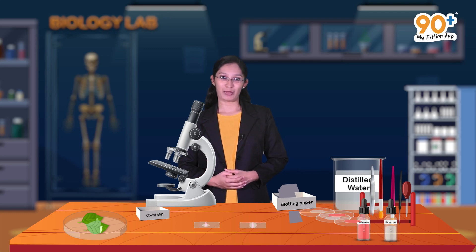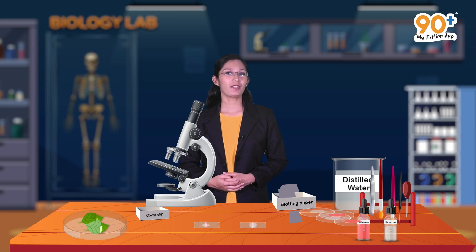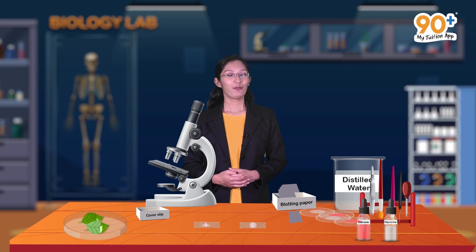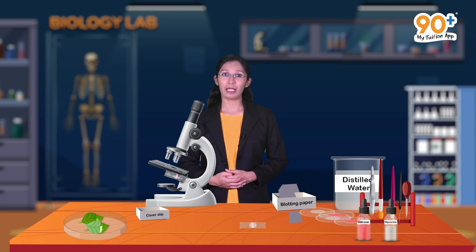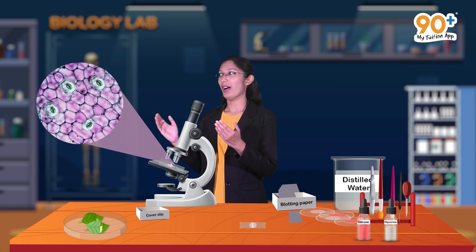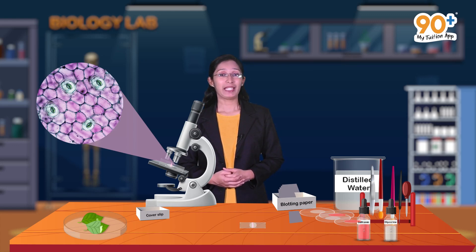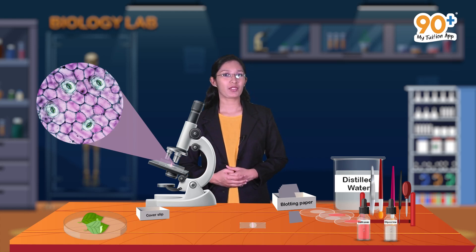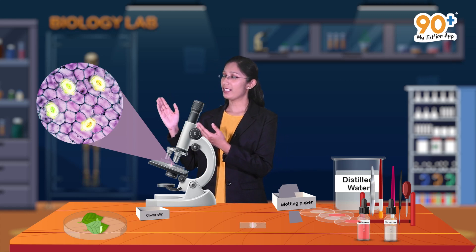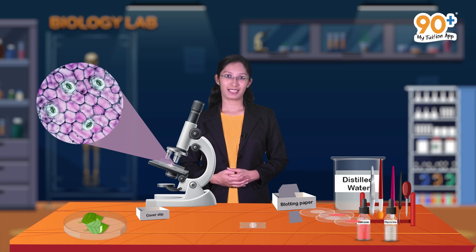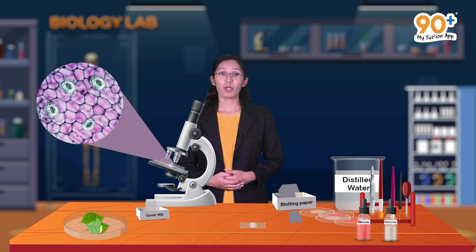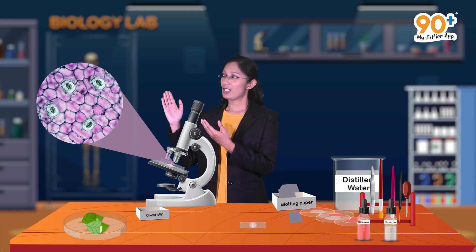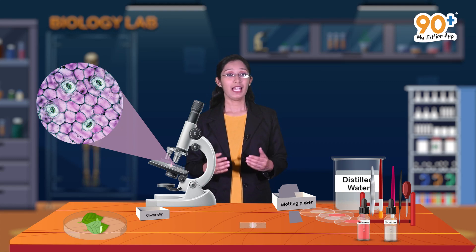Let's first observe the upper epidermal peel under the microscope. Here we can clearly see the stomata and epidermal cells. Now let's count the number of stomata seen here — the total number of stomata is 4. Likewise, we shall count the number of epidermal cells — the total number of epidermal cells is 42.